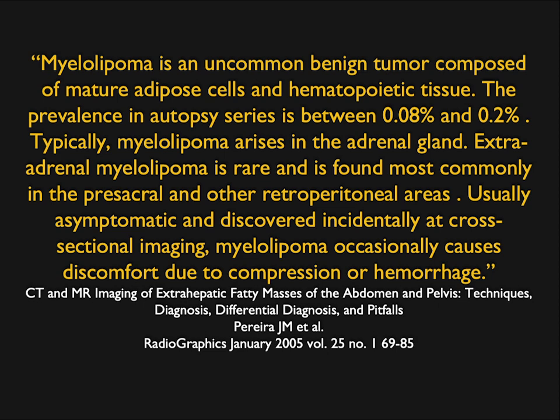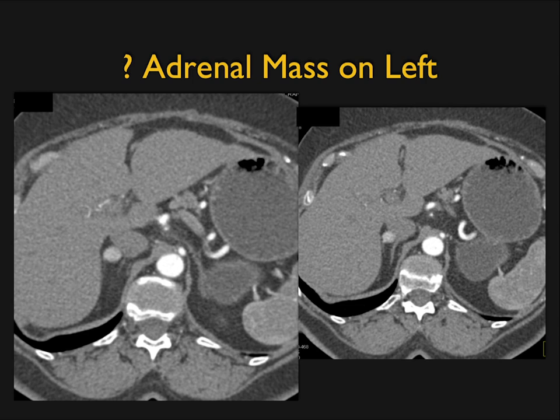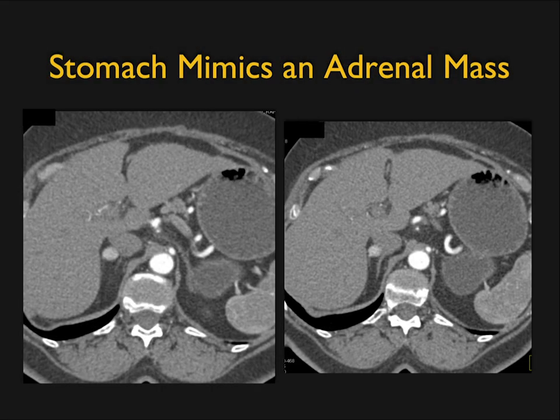Per Peria's article, myelolipoma is an uncommon benign tumor composed of mature adipose cells and hematopoietic tissue that occasionally causes discomfort due to compression or hemorrhage. One additional pitfall: an adrenal-appearing mass on the left can actually be continuous with the stomach. Gastric lesions can mimic adrenal lesions on the left side — we've seen this with duplication cysts — so you want to be very careful to trace the structure.